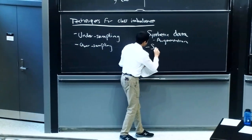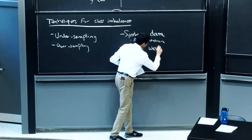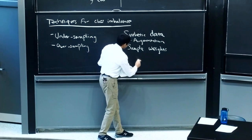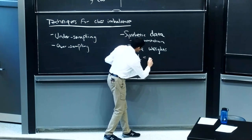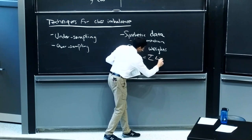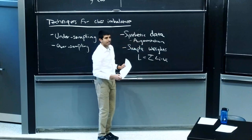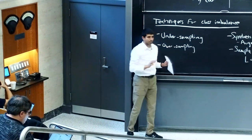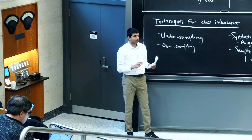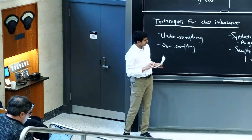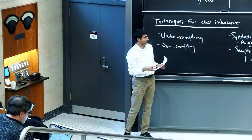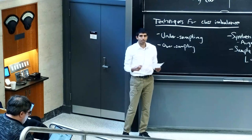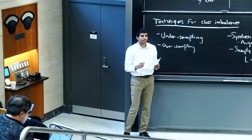Another technique is sample weights. Instead of having your loss function be just the sum of per-datapoint losses, you multiply by sample-dependent weights, underweighting the majority class or overweighting the minority class. In linear regression, multiplying the minority class weight by two is equivalent to oversampling by duplicating those examples, but in settings like neural nets with mini-batch gradient descent, the results may differ.